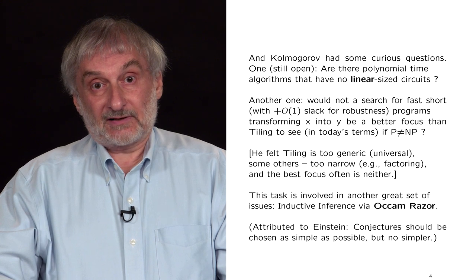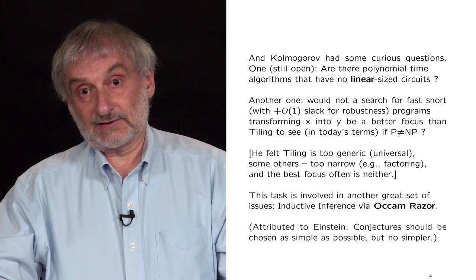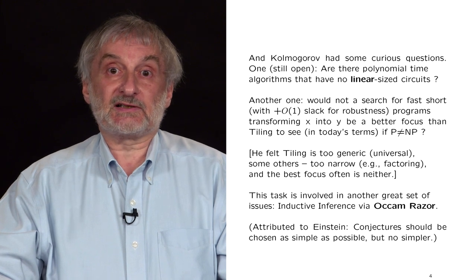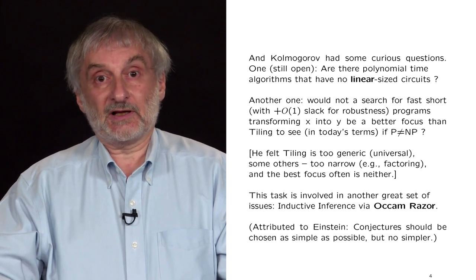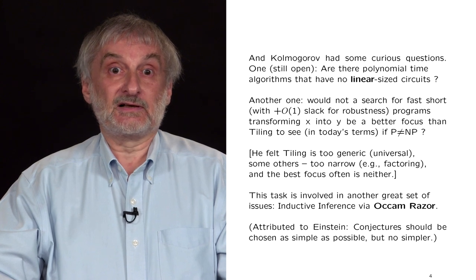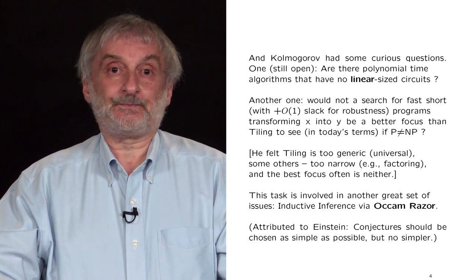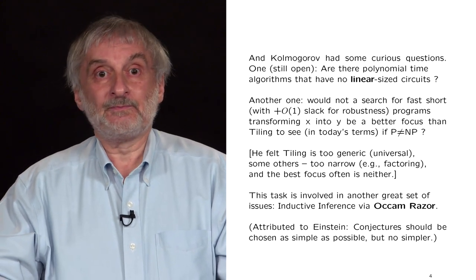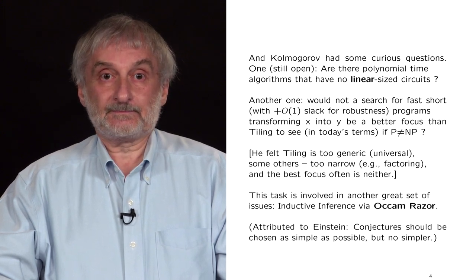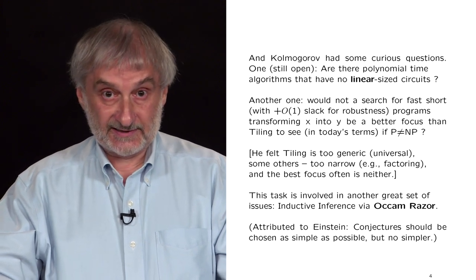Kolmogorov asked several questions at that time. The first question about polynomial time algorithms is still open and interesting. One was whether polynomial time algorithms have no linear size circuits. We knew that some slow polynomial time algorithms cannot be replaced by faster algorithms. But can linear size circuit families replace all of them? His other interesting comment was a bit more involved. We proved at that time mutual information between strings is roughly symmetric. The proof involved exponential search among all short fast programs, transforming a given string X into Y.